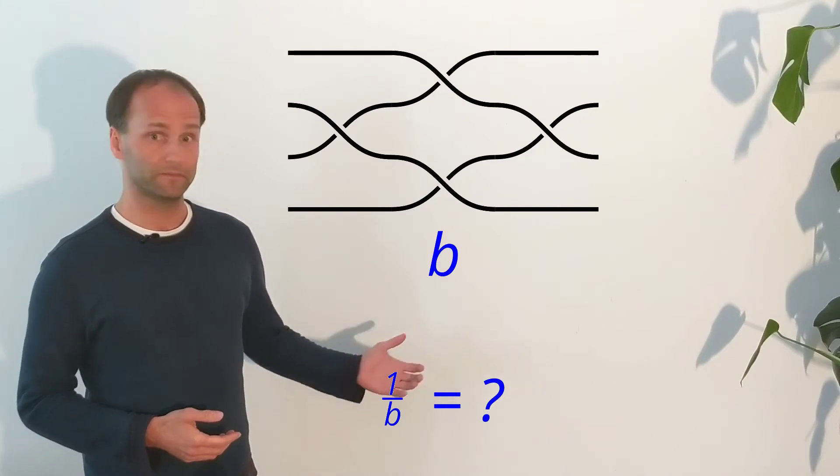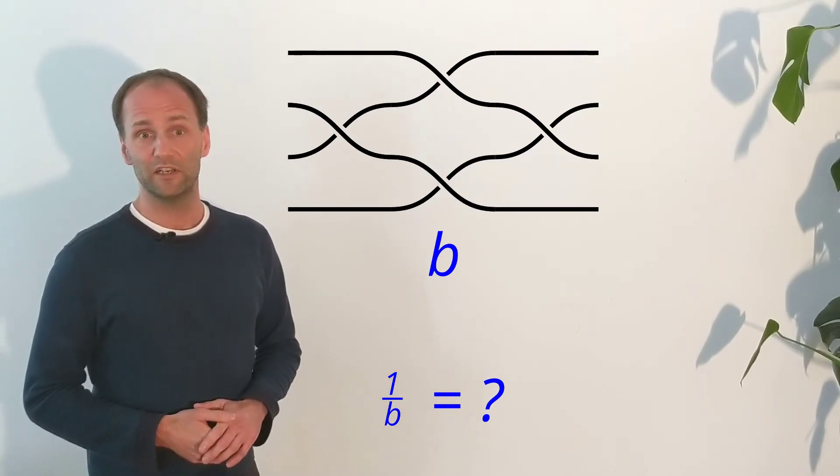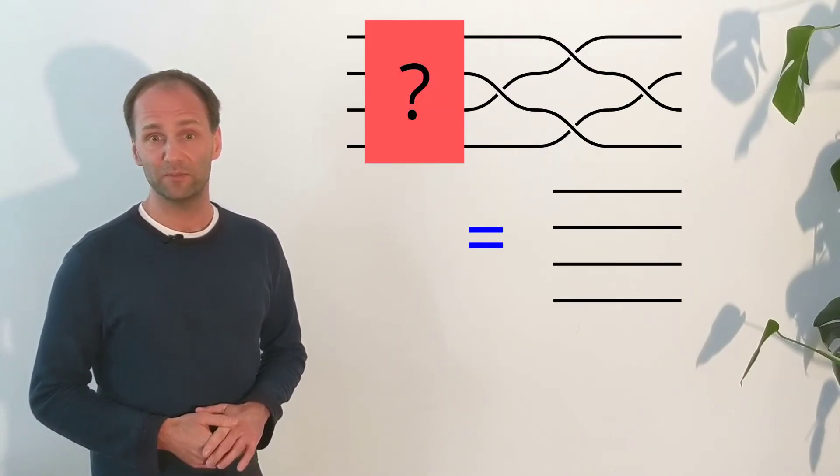If you like puzzles, you can now ask yourself how to find the inverse braid 1 over B for an arbitrary braid B. For instance, what is 1 over B in case B is this braid? That is, which braid do you have to multiply B with in order to resolve all crossings?